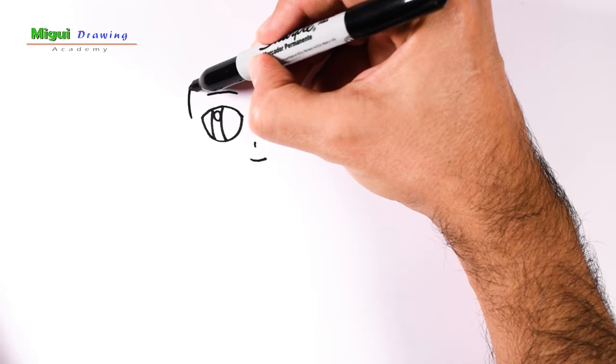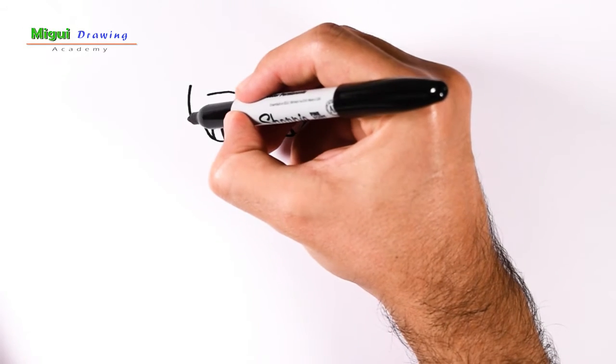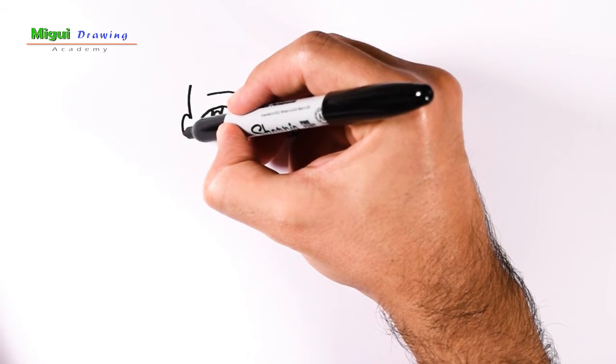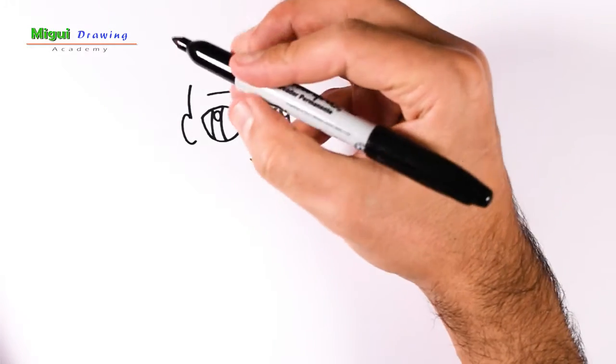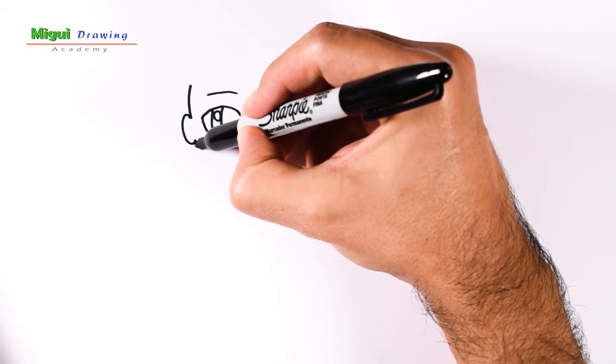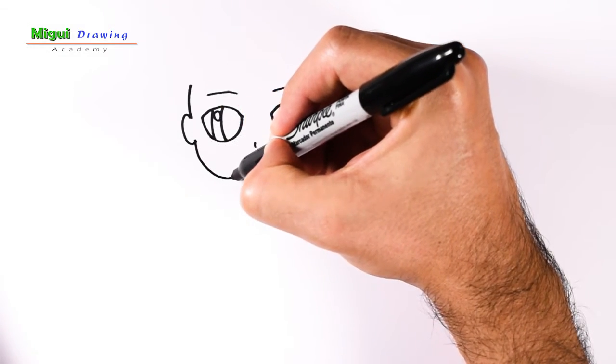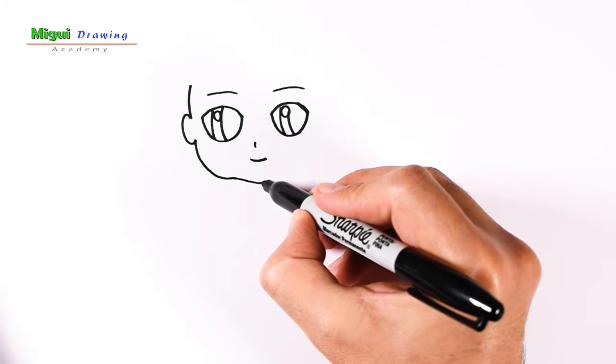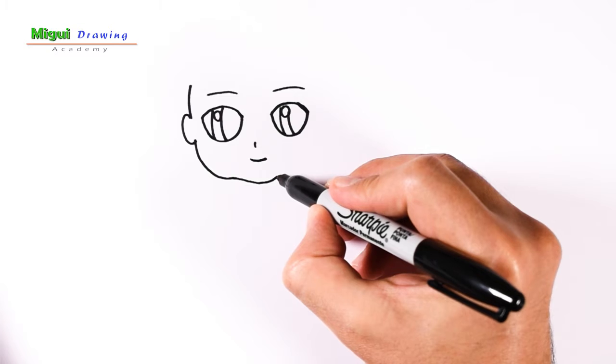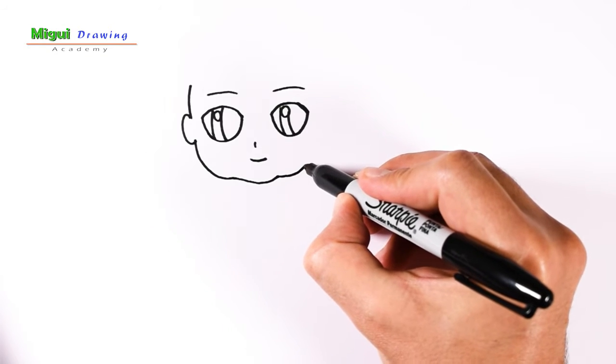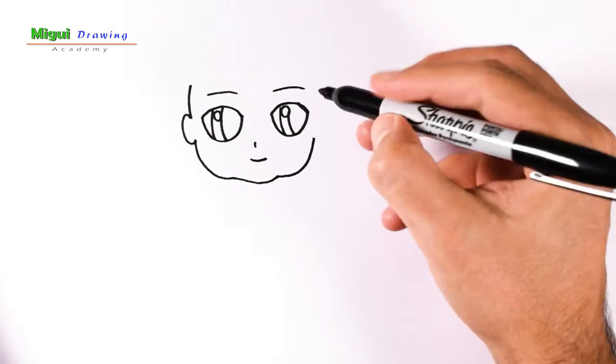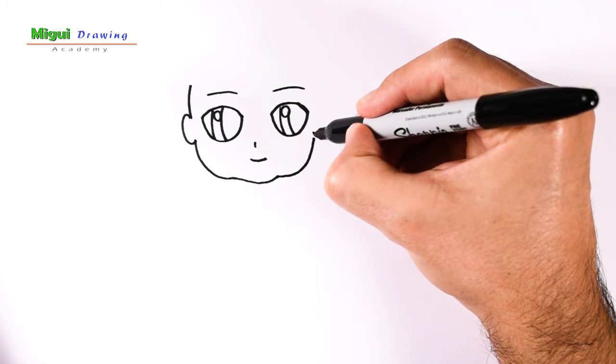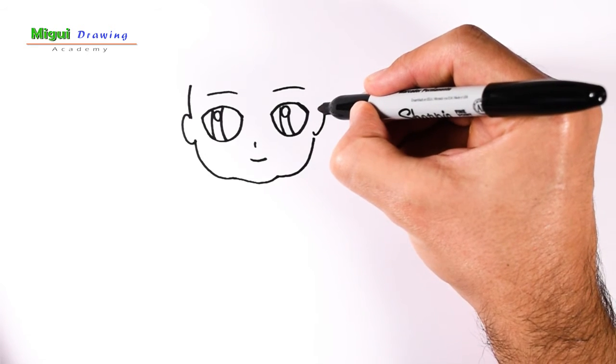Now the head. You make a small circle for the ear, then the cheek a bit lower, and complete the other cheek. The other ear and complete the forehead.